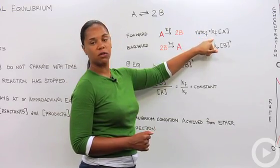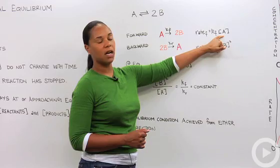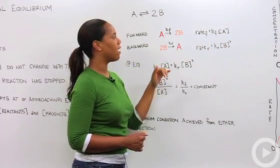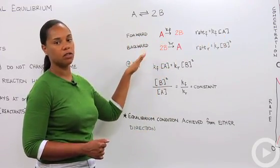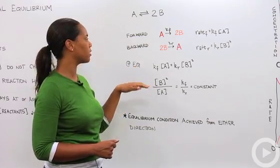If we wrote the rate equation for that you'd have the rate of the forward reaction is equal to k sub f times the concentration of A, recalling that for rates of reactions it's dependent on the concentration of the reactants not the products.